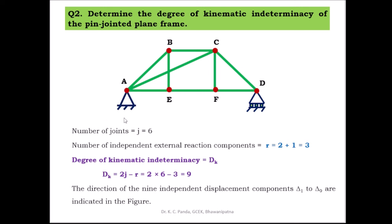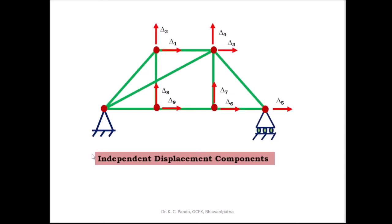At joint E there are 2 displacements (delta 6, delta 7), and at F there are 2 displacements (delta 8, delta 9), giving 9 total. At A there is no displacement because the vertical and horizontal reactions constrain all movement. These are the directions of the 9 independent displacement components delta 1 through delta 9.